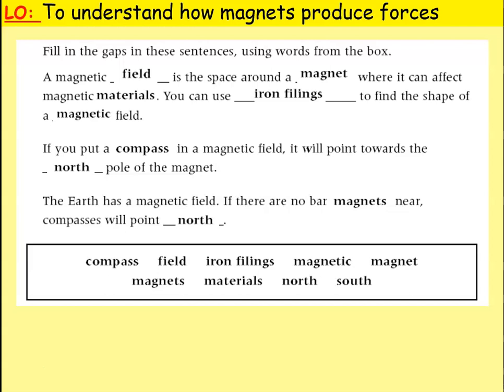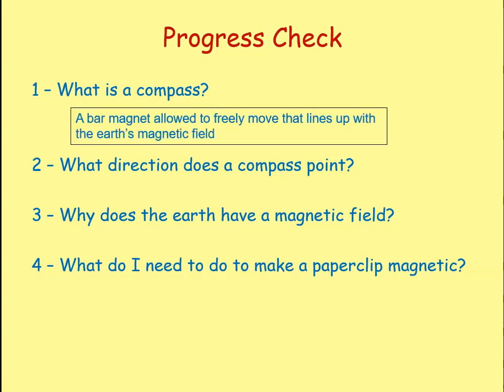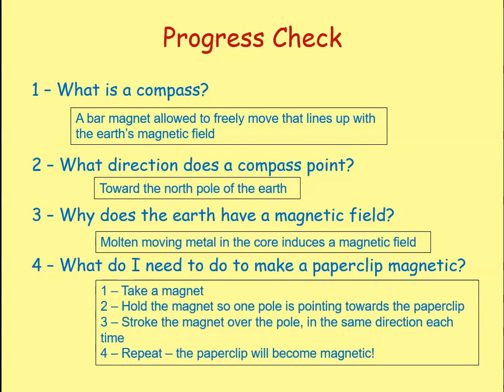Progress check — four questions. Question one: what's a compass? A compass is a bar magnet allowed to freely move that lines up with the Earth's magnetic field. Question two: in what direction does it point? Always towards the north pole. Question three: why does the Earth have a magnetic field? Because molten, moving metal in the core induces a magnetic field around the Earth. Question four: how do I make a paperclip magnetic? Stroke a magnet over it in the same direction each time using one pole, and keep repeating until it becomes magnetic.